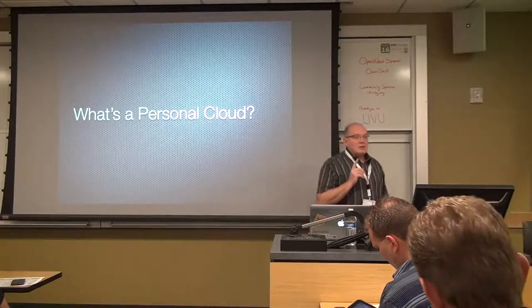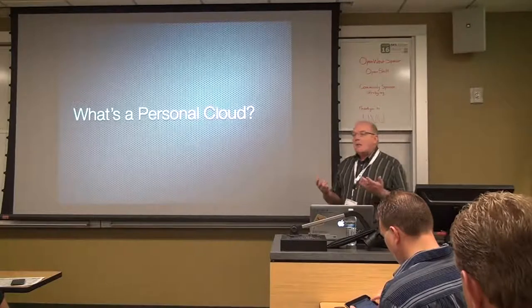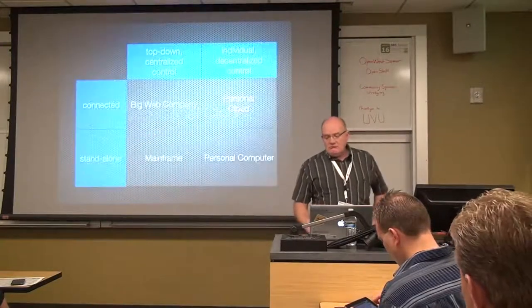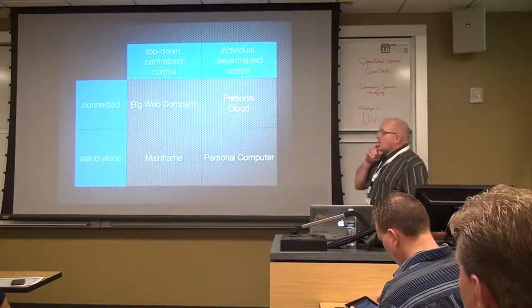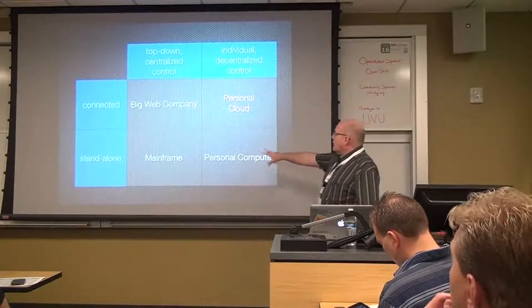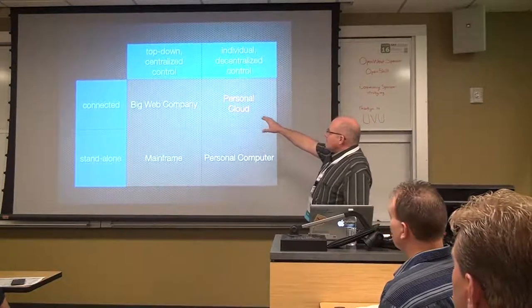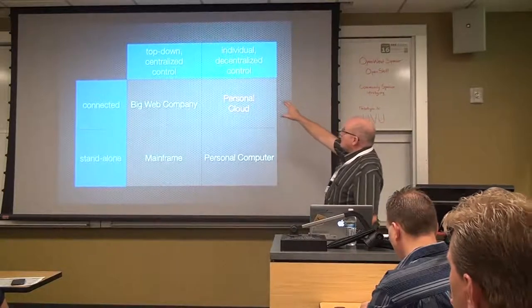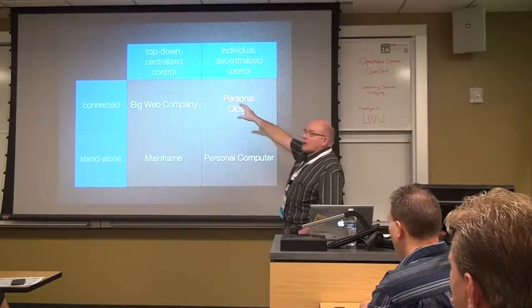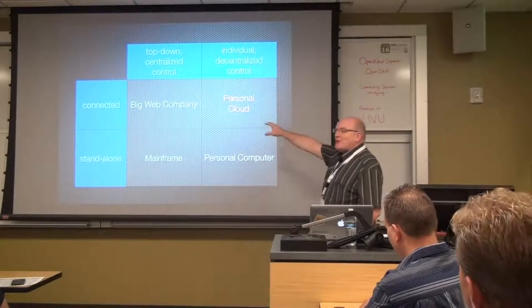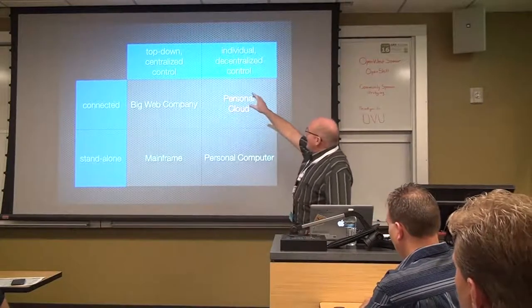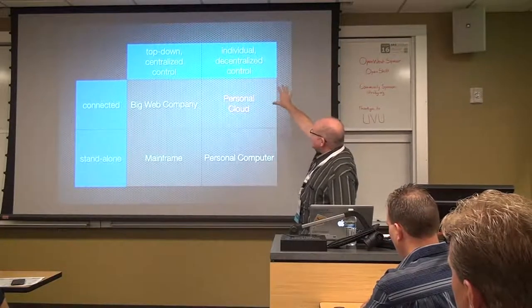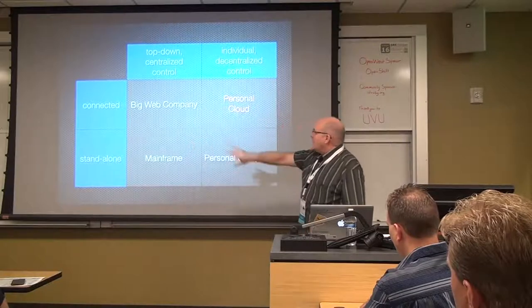The first thing to talk about is what do I mean when I talk about personal clouds? What is a personal cloud and how can we think about it? Well, there are a number of different ways we could talk about it. Every problem known to man can be solved — or understood — by two-by-two matrices. So here's my two-by-two matrix. At the top, we've got top-down centralized control and individual decentralized control. On the columns, we've got connected and standalone.